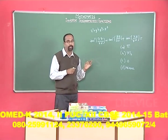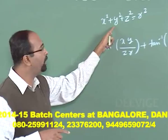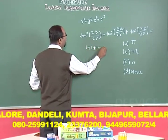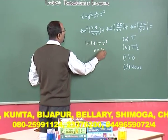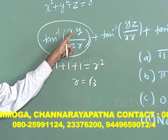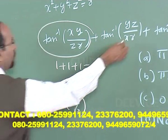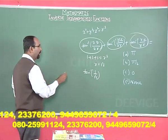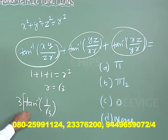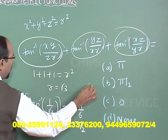Though this problem can be solved using standard methods, let me give you a shortcut. Let x = y = z = 1; then r² = 3, so r = √3. The expression becomes tan⁻¹(1/√3) + tan⁻¹(1/√3) + tan⁻¹(1/√3), which equals 3 × tan⁻¹(1/√3) = 3 × (π/6) = π/2. Therefore Option B is correct.